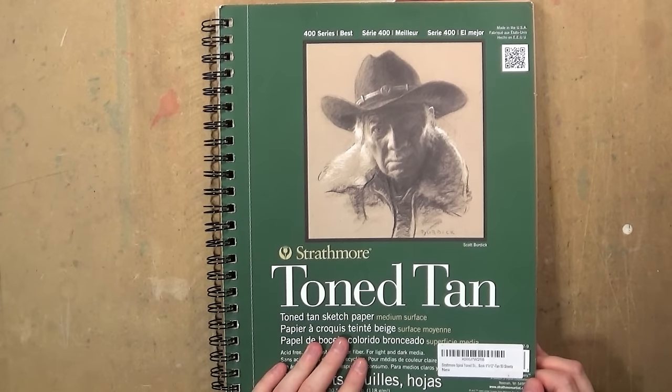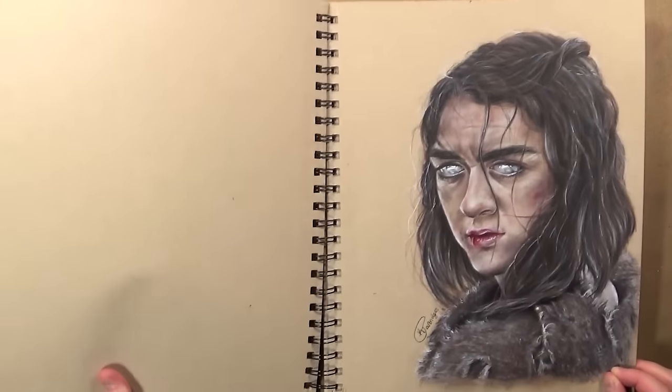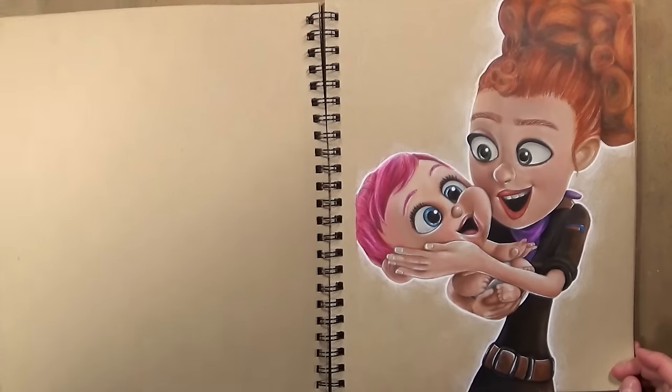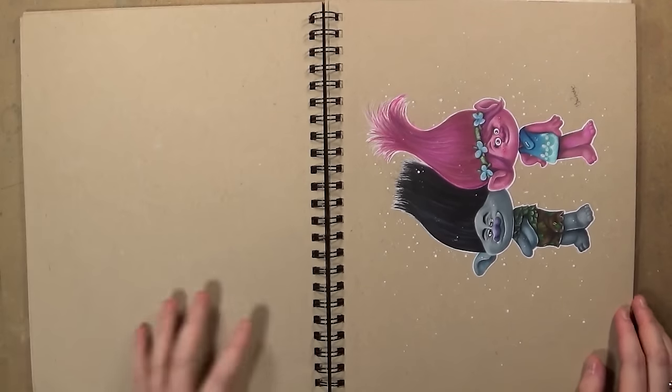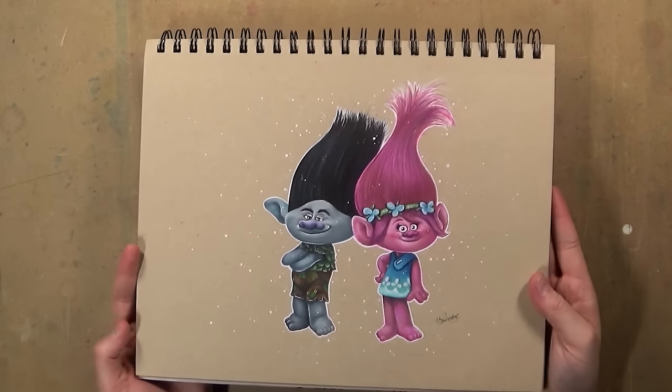Next I'm going to talk to you about the types of paper I use. First I like to use the Strathmore tone tan paper and I like this paper because it's really inexpensive. I use this for a lot of my cartoon work and some of my fan art. What I really love about this paper is that the cartoons really pop on it because it has that nice tan look.